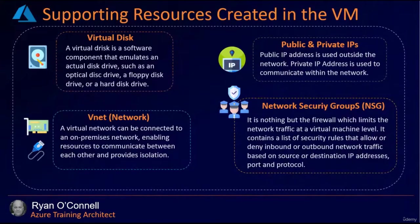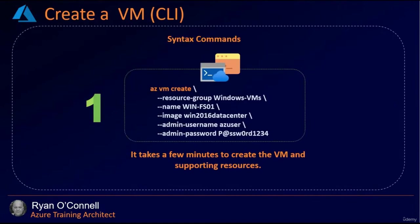When creating an Azure VM through the CLI, the command is 'az vm create' followed by parameters: the resource group (Windows VM), the name (winfs01), the image (2016 Datacenter), the admin username (azuser), and the admin password. It normally takes a few minutes because it's not only building the virtual machine, but also creating the network, virtual disks, public IPs, private IP addresses, and security groups simultaneously.